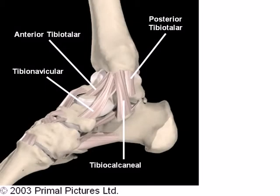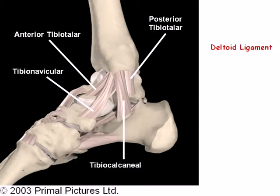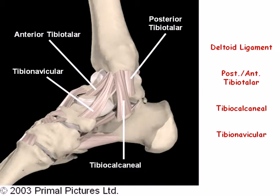Medial and lateral support of the rear foot is provided by a set of ligaments collectively known as collateral ligaments. The medial collateral ligament is referred to as the deltoid ligament. It consists of four blended ligaments: the posterior and anterior tibiotalar, the tibiocalcaneal, and the tibionavicular. The deltoid ligament is broad, thick, and strong. In fact, it is rarely injured. When severely stressed, it is not unusual for the ligament to avulse the bone before tearing.